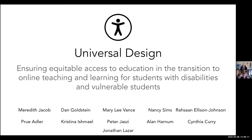My name is Meredith Jacob. I'm the project director for the Creative Commons US project at the Program for Information Justice and Intellectual Property. Our first presenter is Prue Adler, one of our partners at American University, who is going to introduce the basic framework for thinking about accessibility and universal design.